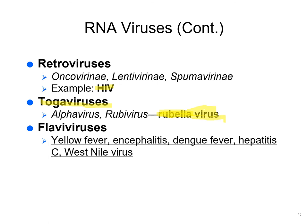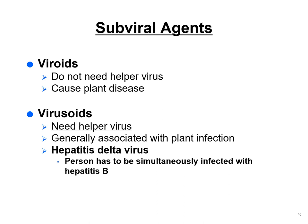Flaviviruses include some serious diseases: West Nile virus, Hepatitis C, yellow fever, some types of encephalitis, and dengue fever. Dengue is spread by mosquitoes and called break bone fever in areas where it's common — because you hurt so bad you think you broke your bones. It's common not too far south of us, south of Miami, and it can be fatal.